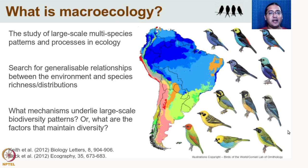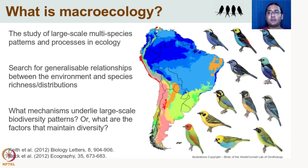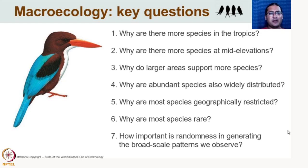Macroecology asks: what are the processes that maintain diversity? What encourages high numbers of species at a particular location? Or what discourages species coexistence and reduces the number of species present? It's a very interesting, rapidly evolving field with exciting research opportunities.